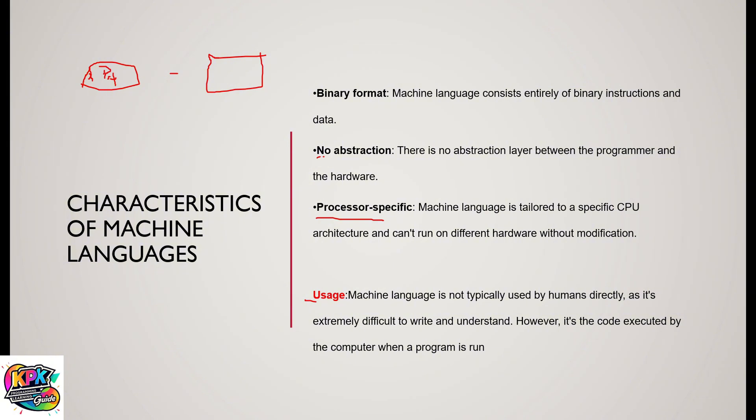Because it's quite difficult to work with, humans don't usually use machine language — it's hard to understand and interpret, as there are a large number of zeros and ones all with different meanings. But it is the instruction that the CPU of the computer understands the most.